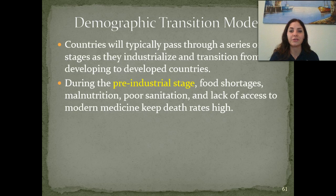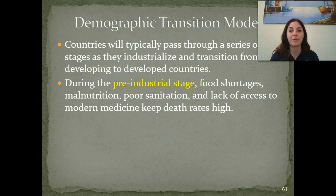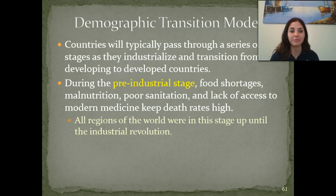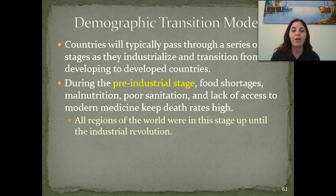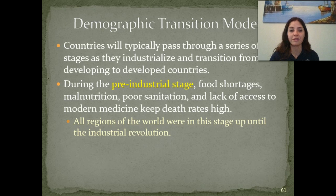During the pre-industrial stage, there are a lot of food shortages, malnutrition, and poor sanitation. They don't have clean water, food, or access to medical care and antibiotics — contributing to a high infant mortality rate. At one point, even the United States and all regions of the world were in this stage, until the industrial revolution hit. Some countries are still in this stage.